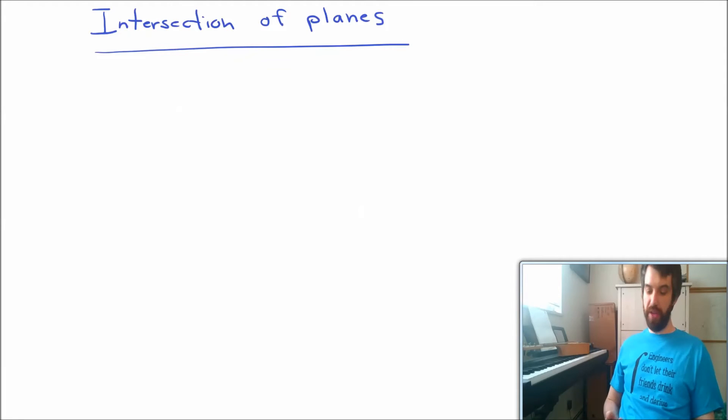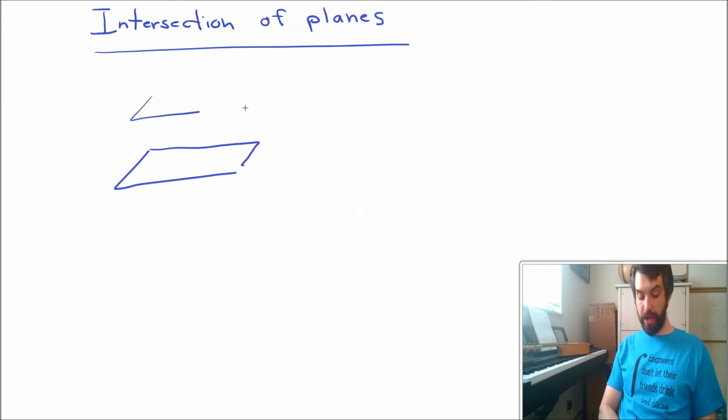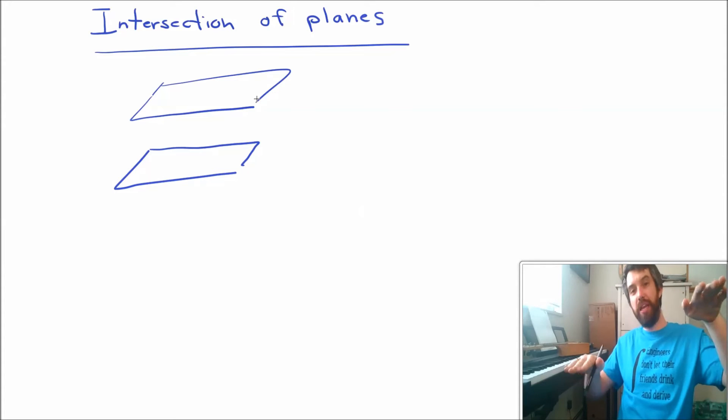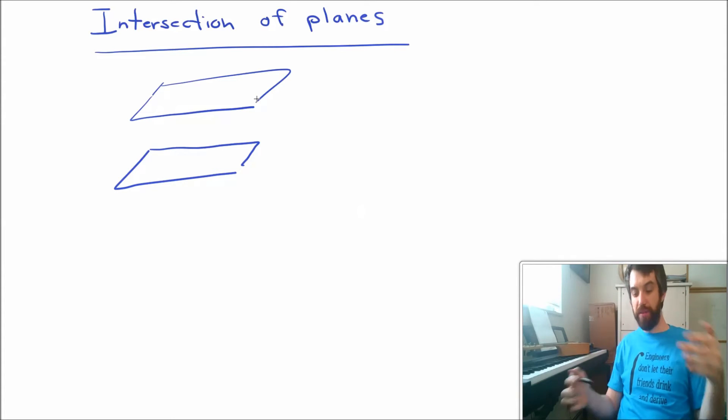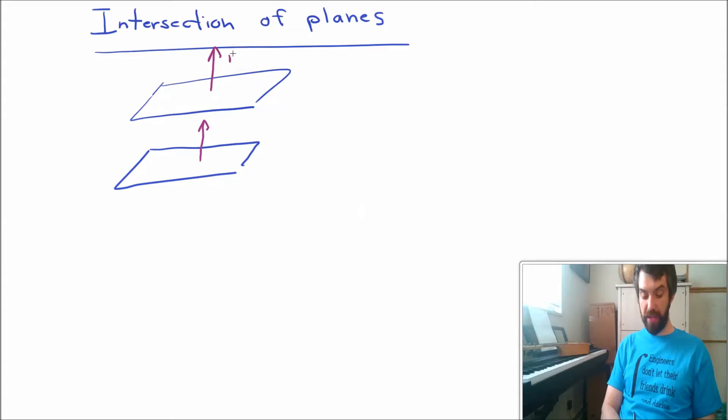So one possibility with the intersection of planes is that they actually don't intersect at all. For instance, you can imagine this pair of planes that I'm going to try to sketch here. These are two planes that are parallel and there's absolutely no intersection between these two at all. However, there is still something we can say about this. In the scenario where they're parallel, the normal sticks straight up of the one and the normal sticks straight up of the other.